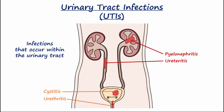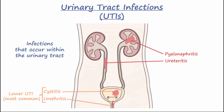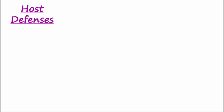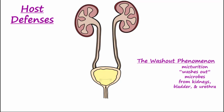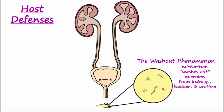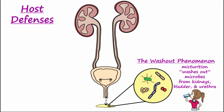Most UTIs involve the lower urinary tract, including the bladder and urethra. The healthy urinary system utilizes several mechanisms to help prevent and fend off microbes that may cause a UTI. The washout phenomenon describes how micturition washes out or removes pathogens from the kidneys, bladder, and urethra, keeping amounts of bacteria low in the urinary tract. Drinking plenty of water helps with the washout.